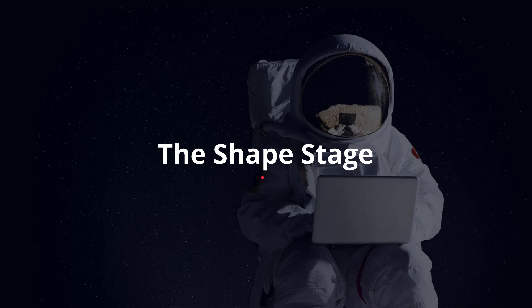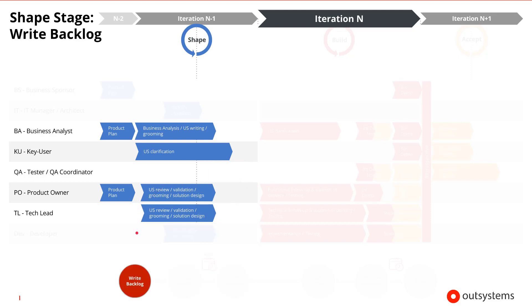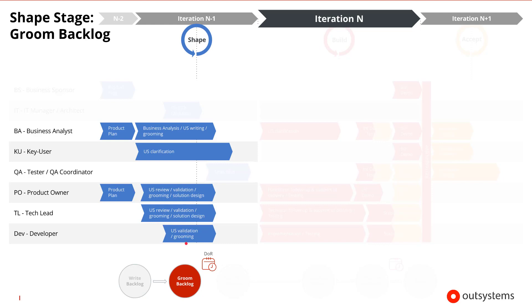Let's look at the shape stage and highlight the key activities from the tester's perspective. The first thing that occurs is writing the backlog — the business analyst will analyze the user stories and make sure they're written in the correct form; the tester does not play any role in this activity. The next activity is to groom the backlog. Many team members can participate, from the developer to the tech lead, product owner, and business analyst. They will validate or challenge the user stories, tune them, and make sure they're estimated correctly. Key users may also get involved if any clarifications are necessary. The tester then validates which user stories meet the definition of ready, especially making sure that the acceptance criteria are correct.